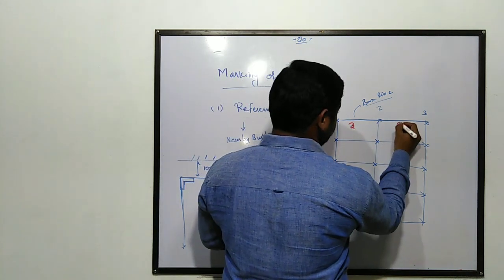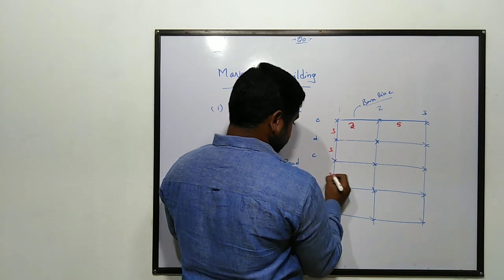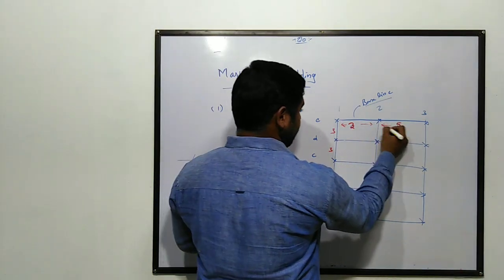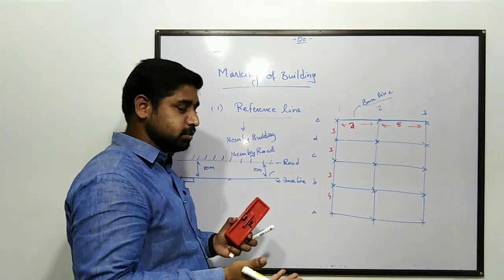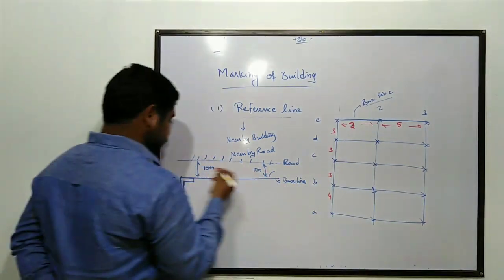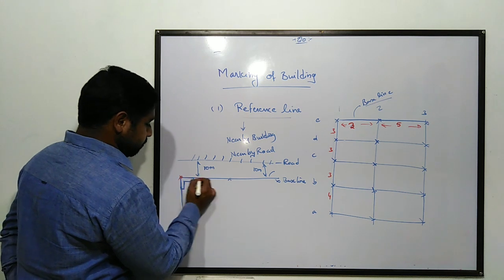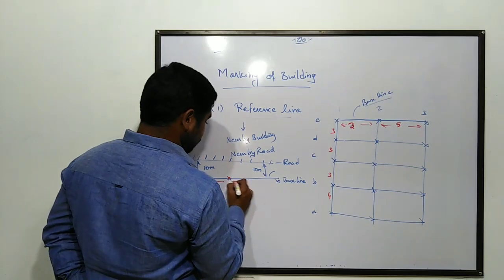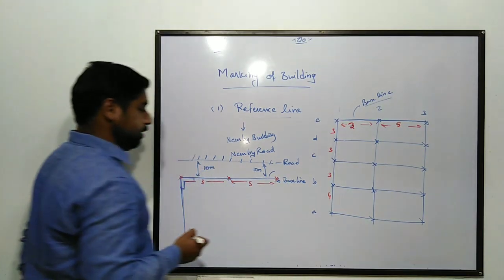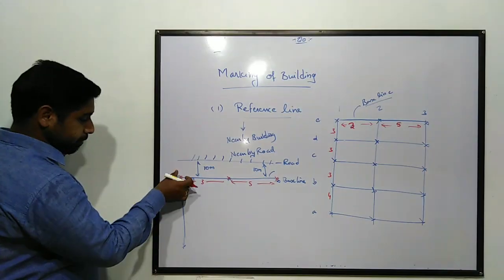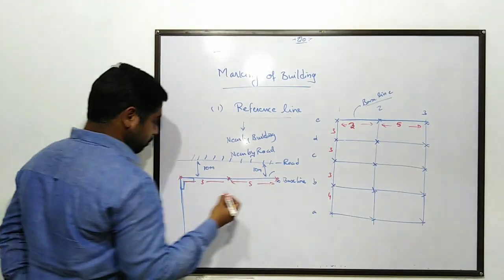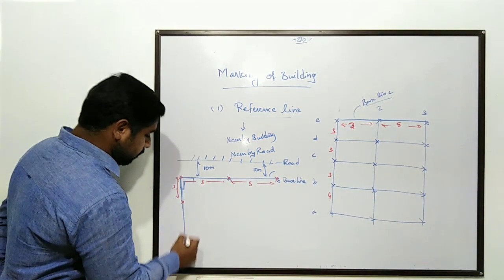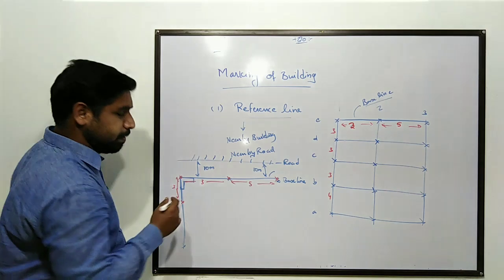Looking at the plan, this span is three meters, this span center to center is five meters. These are the grid lines — center to center distances. The points are established on the ground accordingly: this point, second point, and so on. We establish the base line and the perpendicular line, and mark all column points on the ground.